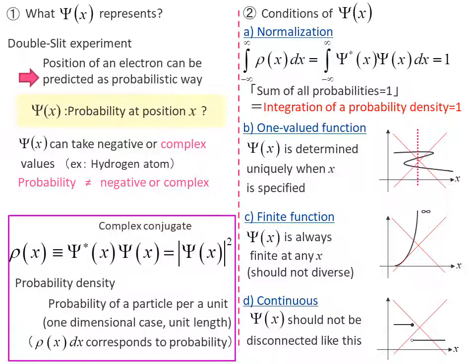However, the solution Ψ(x) of Schrödinger's equation can also be a function of negative values and complex numbers, so we cannot treat it as a probability as it is. We may take the square of Ψ(x) as a probability, but in the case of complex numbers, simple squaring produces another complex number again, so it doesn't work.